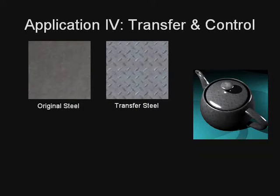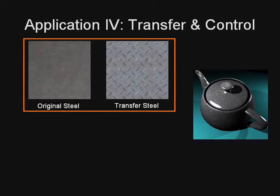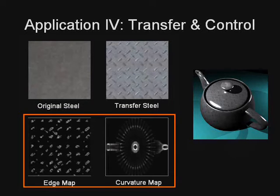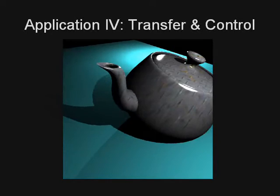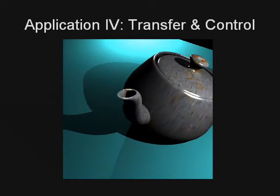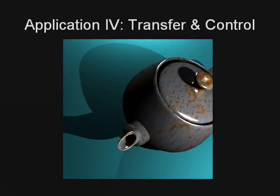Our final example is a rusting teapot. We transfer the time-varying appearance to a new static texture of a steel diamond plate. We also control the rusting to happen faster at the edges and in high curvature regions. We can render with changing viewpoint and specularities as the surface evolves over time.